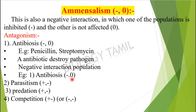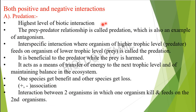The second type under antagonism is Parasitism. In parasitism, if the parasite is in our body, it causes disease to the host.